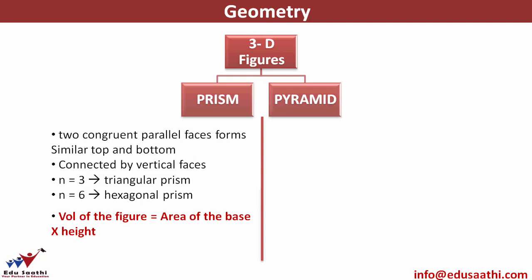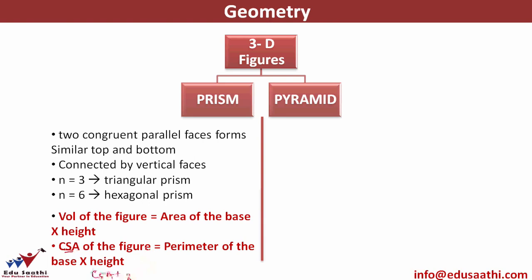The curved surface area is the area of the curved part only — not including the area of the base and top. It equals the perimeter of the base into the height. Area of the base into height gives volume; perimeter of the base into height gives curved surface area. For total surface area, I add the curved surface area plus twice the area of the base, since base and top are the same.